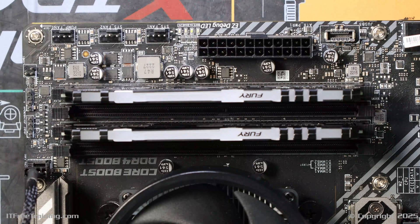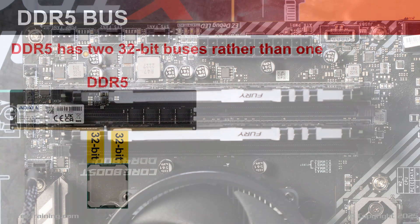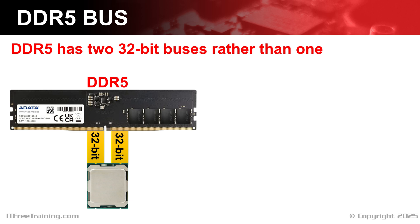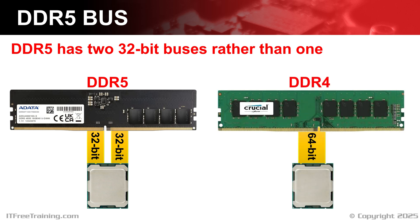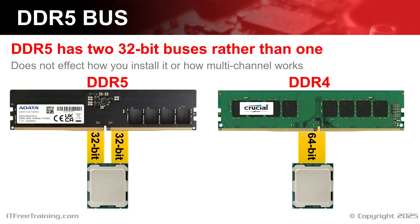That's it for installing memory modules. However, there is a small change in how DDR5 memory modules operate which does not affect how you install them. DDR5 has two separate 32-bit buses to the memory module, whereas DDR4 has one 64-bit bus. This effectively means that DDR5 has two independent channels to send data whereas DDR4 has one. This does not affect how you install the memory modules or how multi-channel works. So install DDR5 the same way you install any other DDR memory. Don't let the fact that the channel is effectively divided into two confuse you — the process is the same.